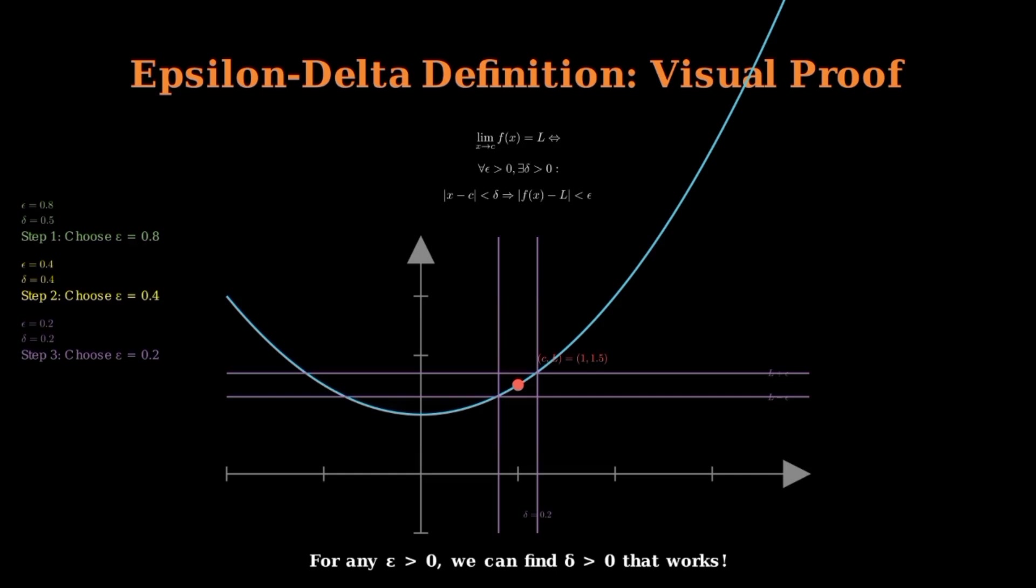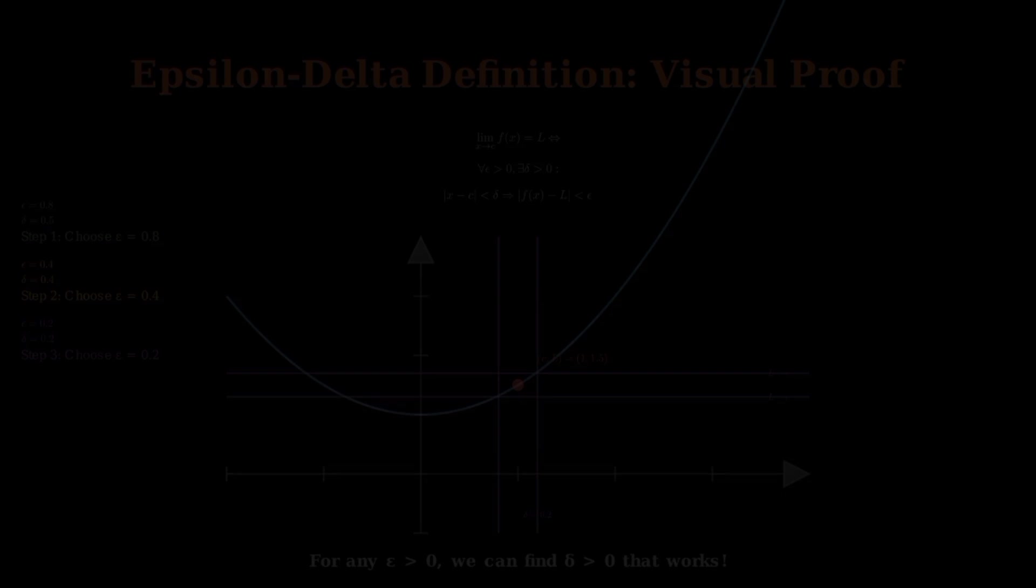This demonstrates that no matter how tight we make the epsilon constraint, we can always find a corresponding delta. This is the essence of continuity.